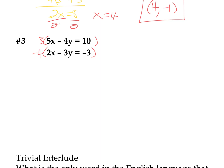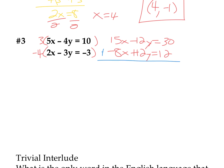So here I'm going to have 15x minus 12y equals 30. And I'm going to have negative 8x plus 12y equals 12. Now I'm going to add the two equations together. If these were both negative 12 and negative 12, I'd subtract them — same signs, subtract; different signs like negative and positive here, add. So adding these two equations together, I get 7x equals 42.